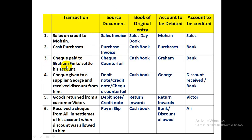Transaction 3: Check paid to Graham Finn to settle his account. Because payment is made by check, the information is traced from the check counterfoil. The book of original entry is the cash book, where issued checks are first recorded. Bank is credited because the check is paid, and the trade payable Graham account is debited because it is being settled.